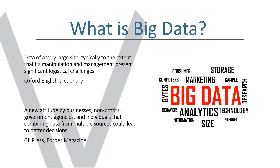Velocity is the speed at which data accumulates or streams from place to place. Volume is the sheer amount of data. Value — big data is the basis of what a lot of highly profitable corporations use to make those profits. Variety — the data comes from a huge variety of sources, anything from your Internet of Things device to your mobile device to more traditional sources like social media. And veracity — is the data trustworthy? Can you trust what it's telling you? Is it actually clean?